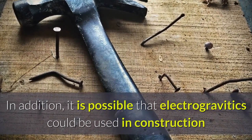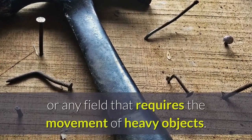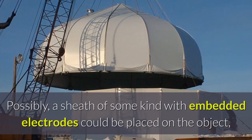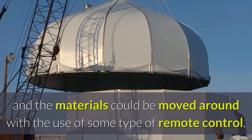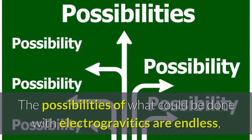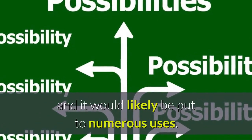In addition, it is possible that electrogravitics could be used in construction or any field that requires the movement of heavy objects. Possibly, a sheath of some kind with embedded electrodes could be placed on the object, and the materials could be moved around with the use of some type of remote control. The possibilities of what could be done with electrogravitics are endless, and it would likely be put to numerous uses.